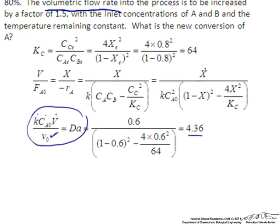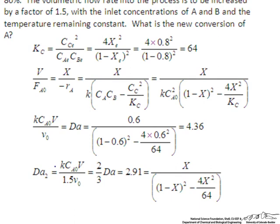If we write this out, this second Damköhler number equals the original Damköhler number divided by 1.5, so two-thirds of the original Damköhler number of 4.36, which equals 2.91.